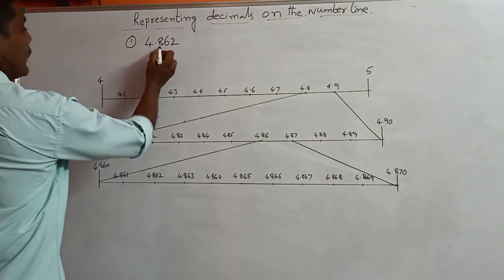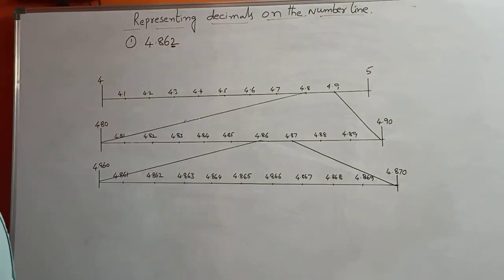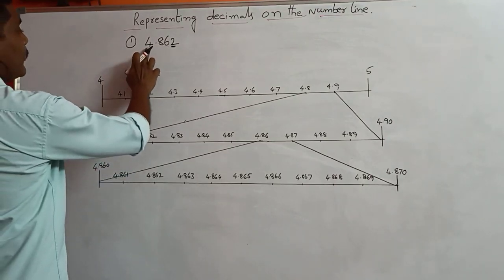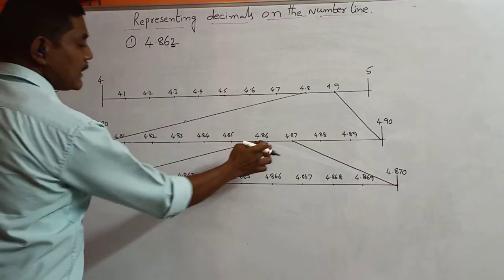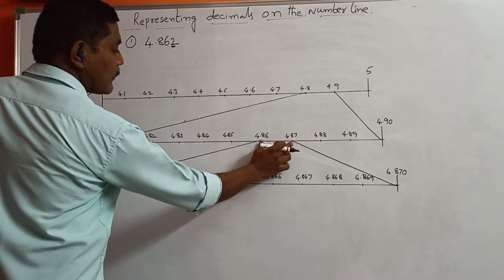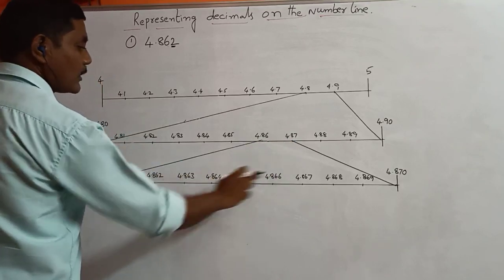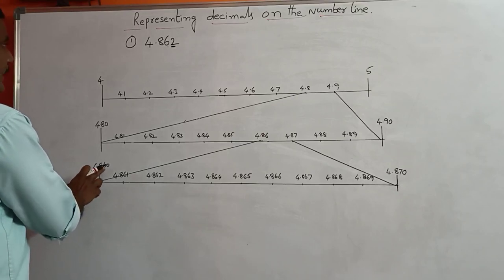Again, after 4.8, the third decimal digit is 2. So again we are going to divide 4.86 to 4.87. I am going to divide this part into 10 parts. Then the first part equals 4.860.